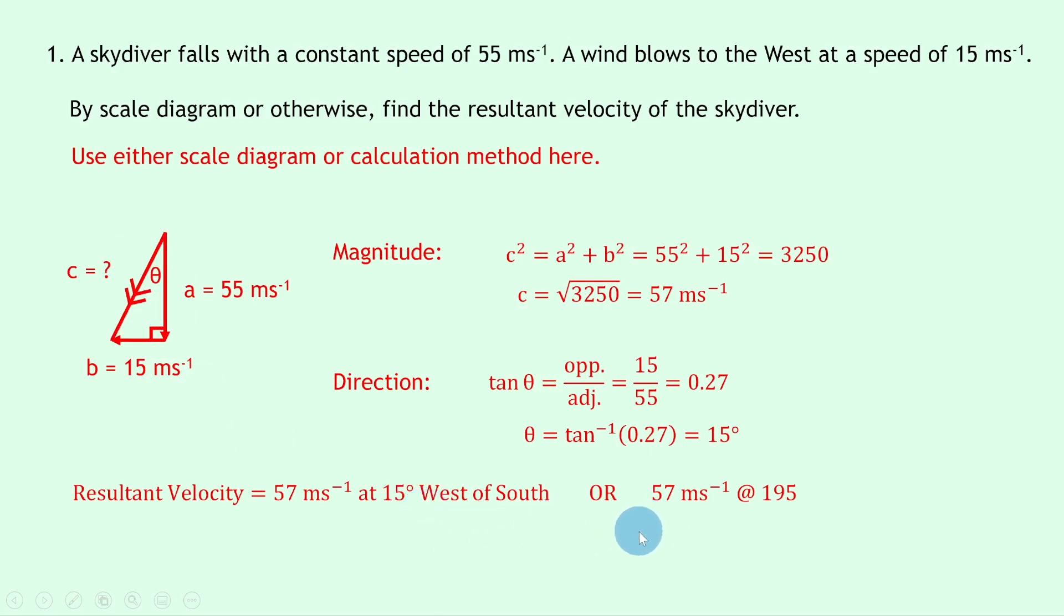Or as a bearing, we can say 57 meters per second at a bearing of 195. Now where does that come from? Well remember for bearings we go to the starting point and we can think about north as being on a bearing of 000, and we then want to come from there all the way around to the resultant vector. So going around we get 180 plus the angle of 15 degrees, so we end up with 195 as our bearing.